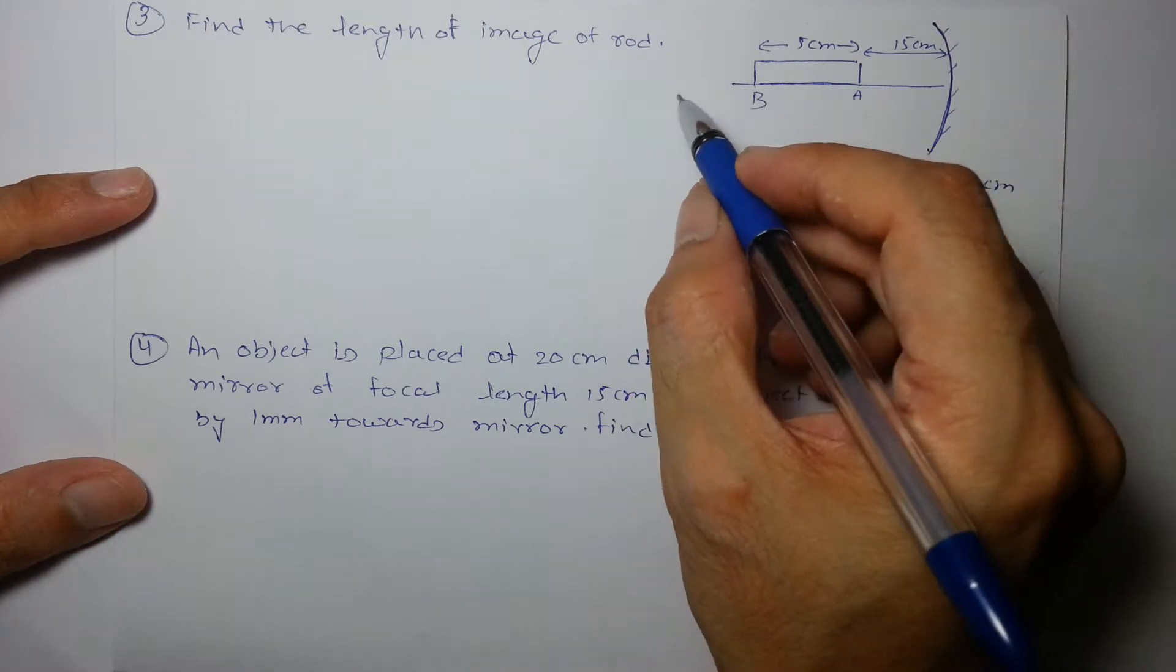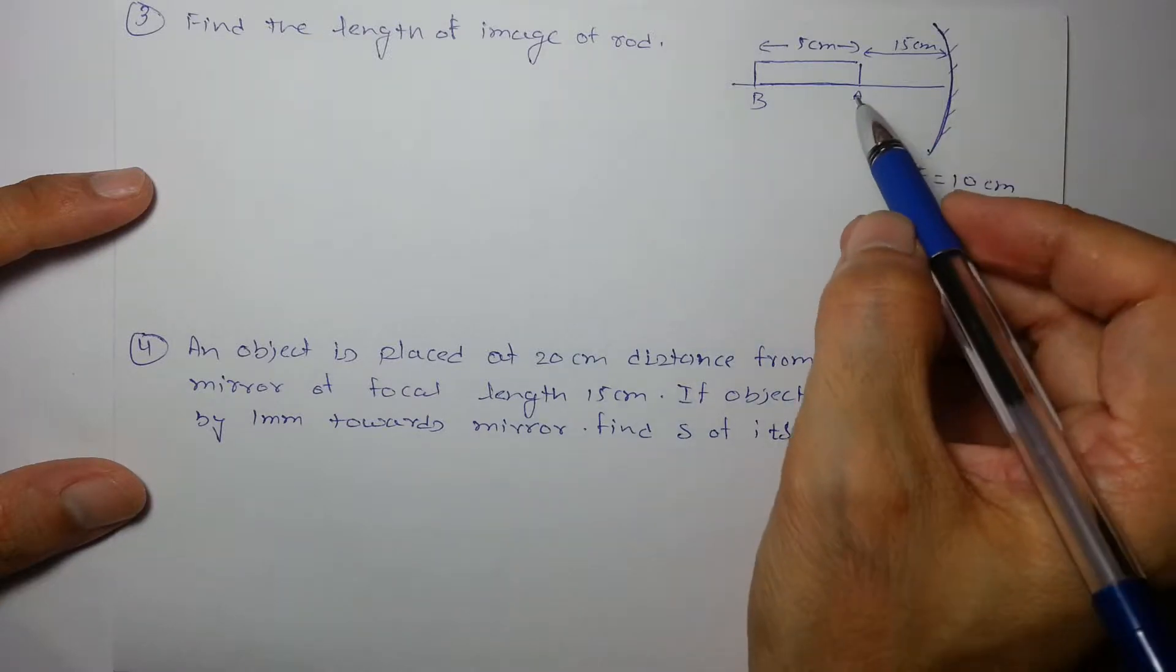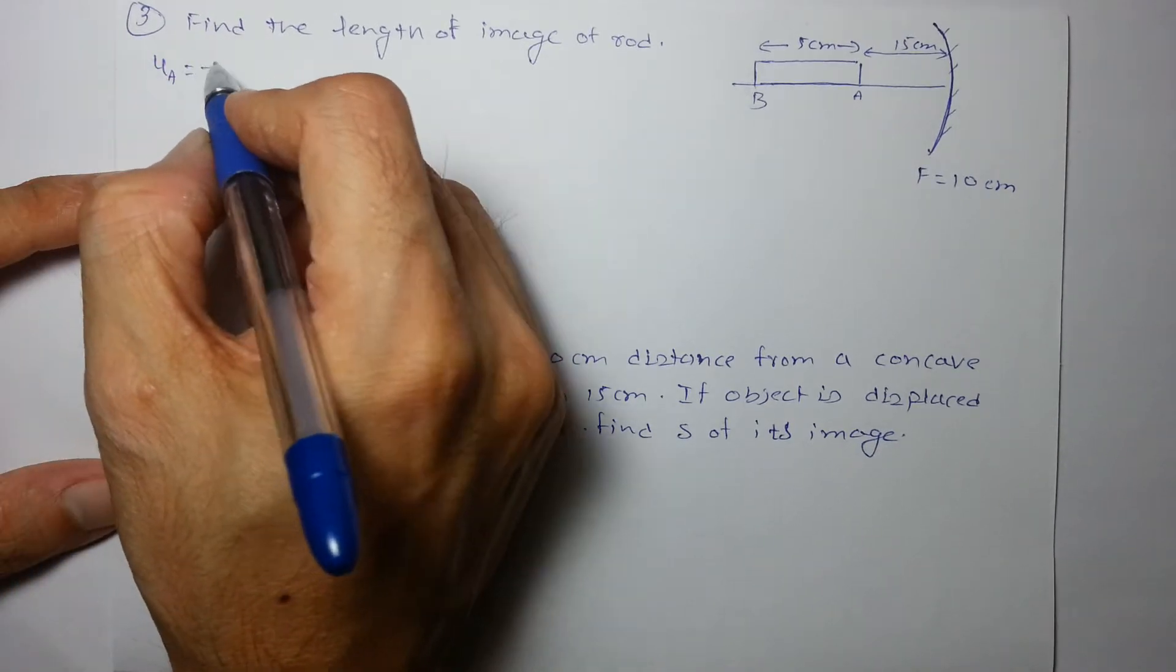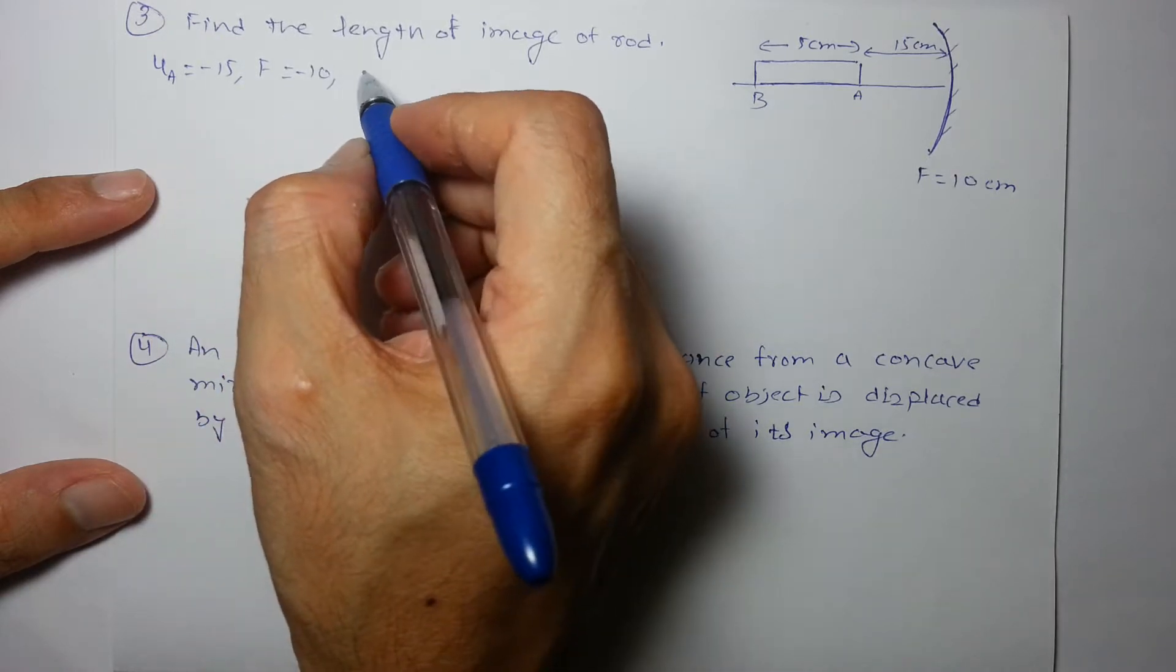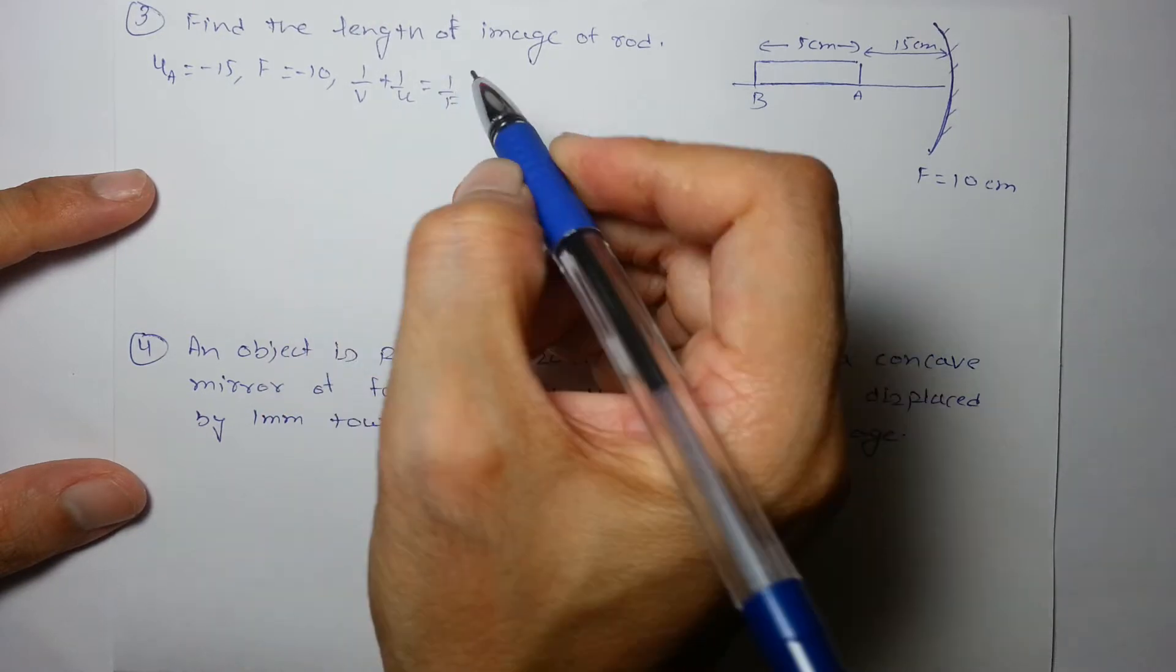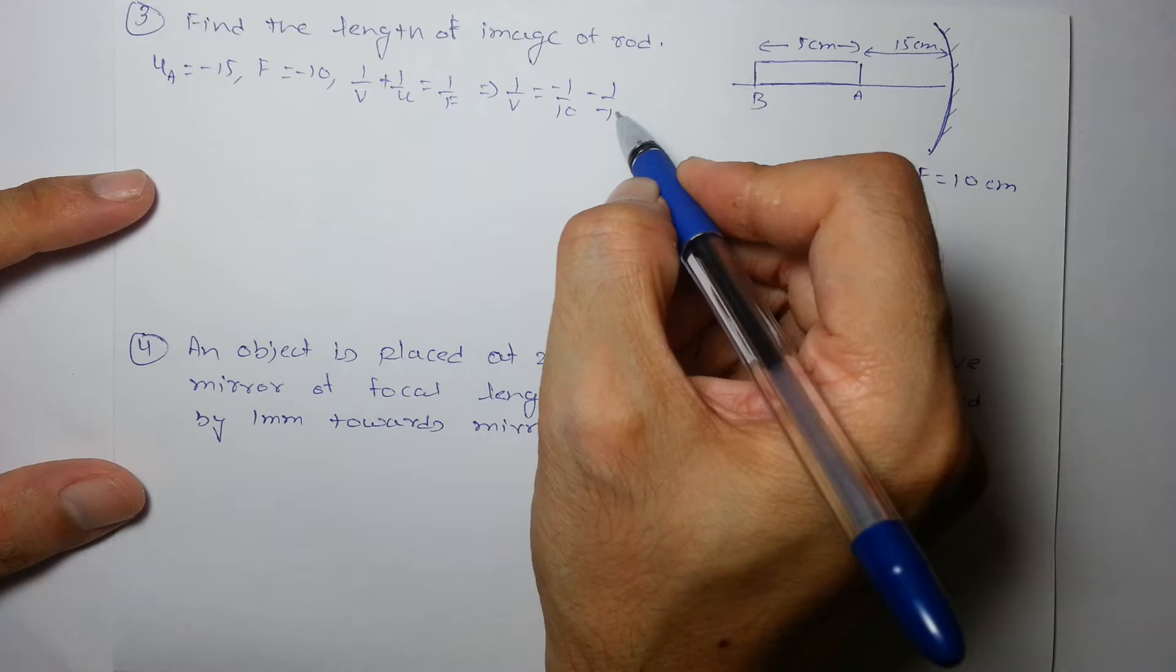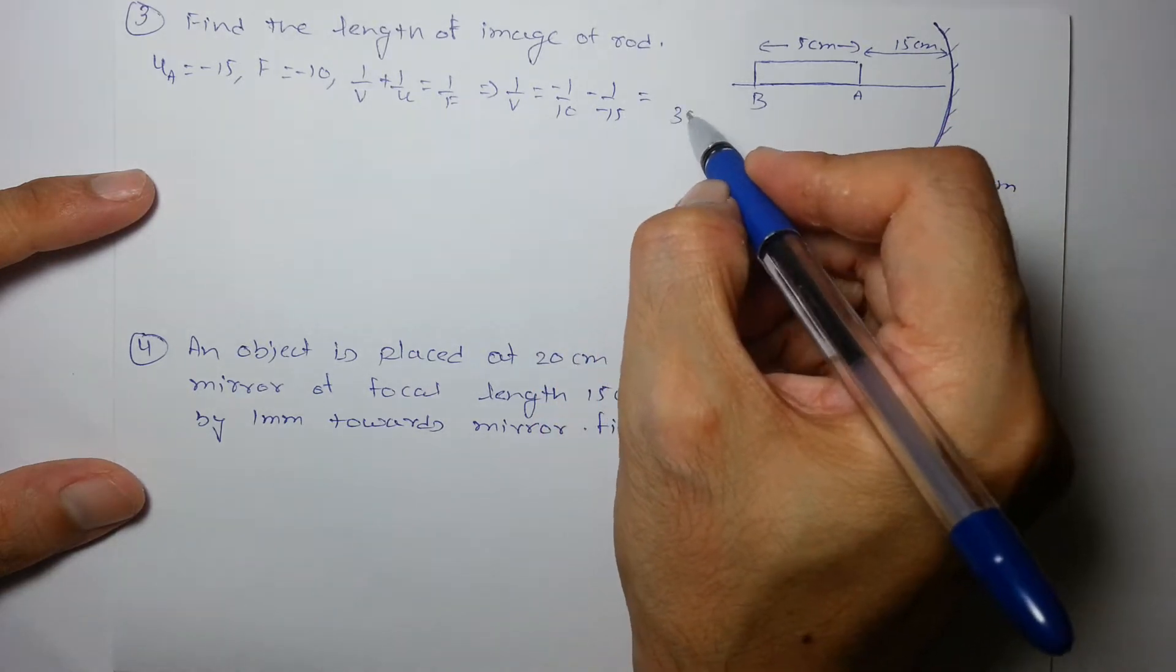So I have to draw the image and also find the magnification. Let's for point A, u_A is minus 15, f is minus 10. Using 1/v + 1/u = 1/f, while calculating 1/v we get -1/10 - (-1/15), so that will come out to be -3+2 over 30.